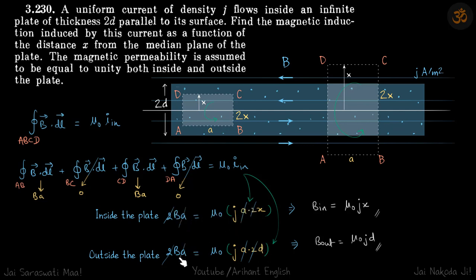So A will get cancelled here. And 2 will also get cancelled. So inside the plate, we get the field as mu naught Jx. And outside the plate, the field is mu naught JD, which is a constant.